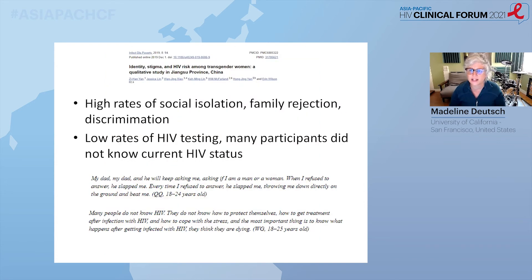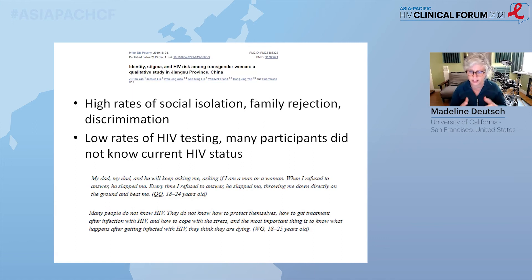High rates of social isolation, family rejection, and discrimination were found, along with low rates of HIV testing in this particular study from China. Someone described how their father would beat them when they refused to answer whether they were male or female. People are also unaware of their HIV status — they don't know how to engage in care, and there isn't community-level fluency around the need to get an HIV test and knowing where to do it.